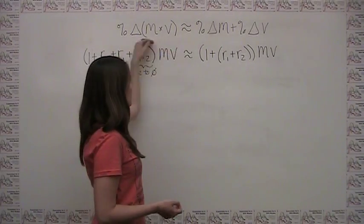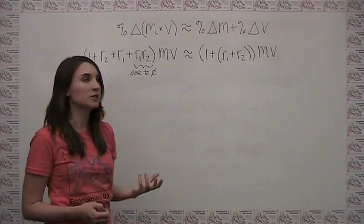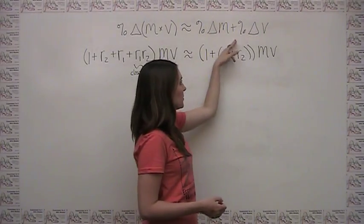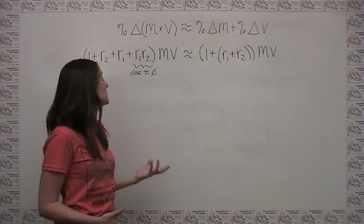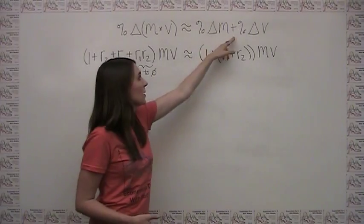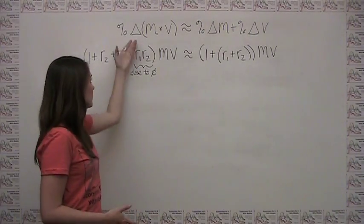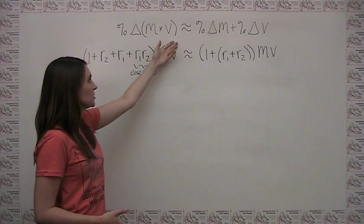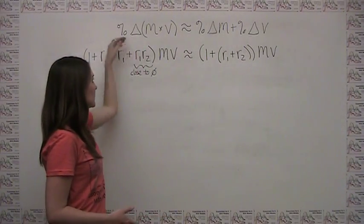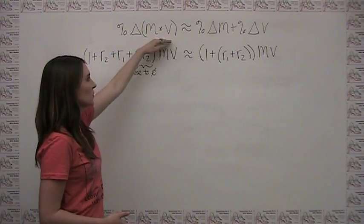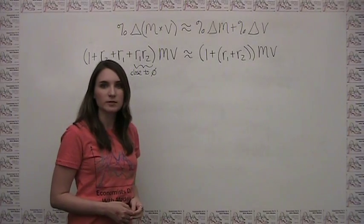Furthermore, when we're talking about the quantity theory of money, we're often in a situation where the percent change in the velocity of money is in fact zero. When one of these growth rates is zero, it's no longer even an approximation — it's exact. Because if one of these quantities stays constant, then it has to be true that the percent change of the product is exactly equal to the sum of the percent changes.